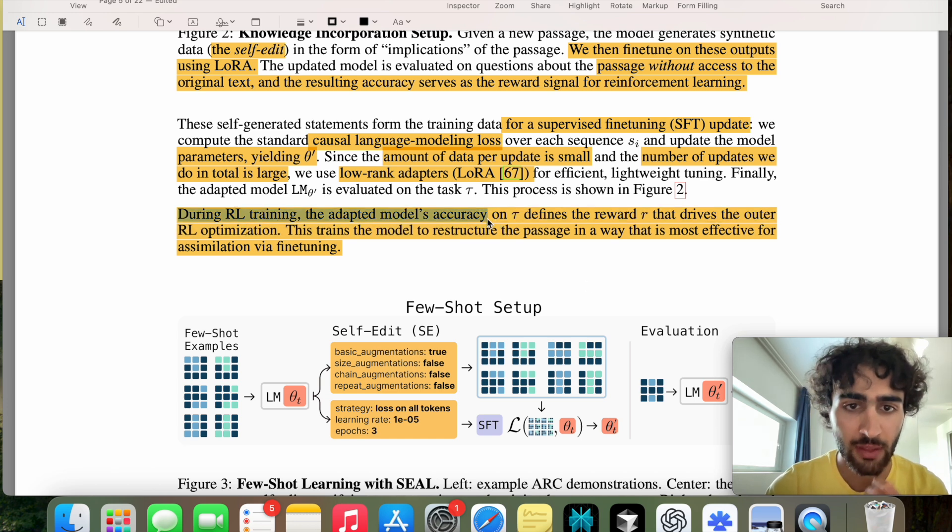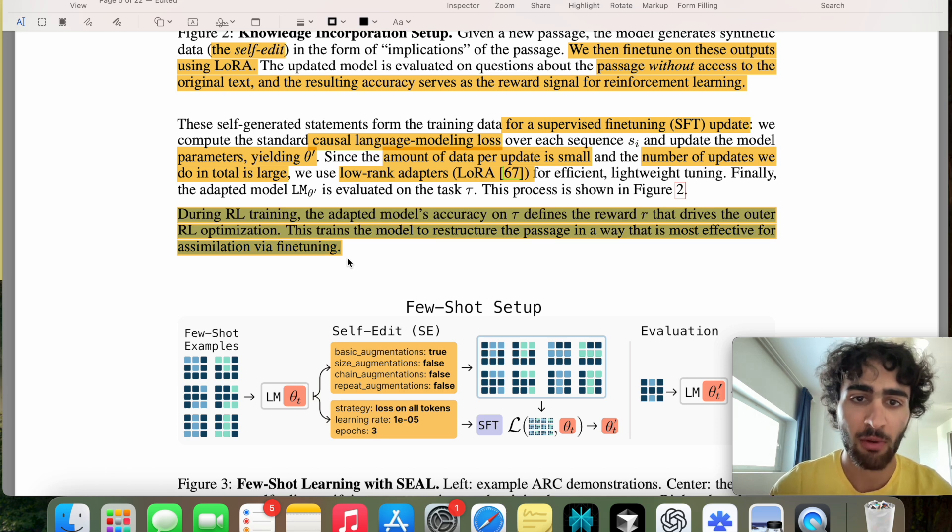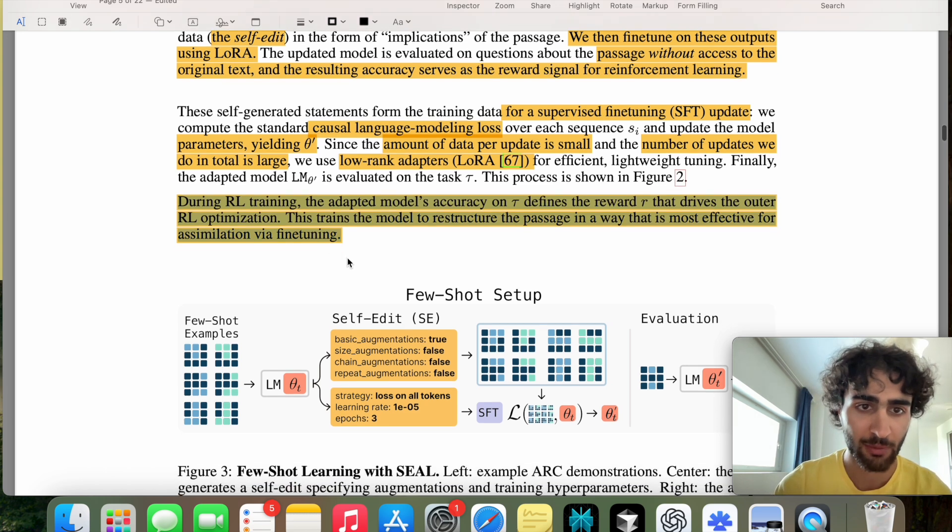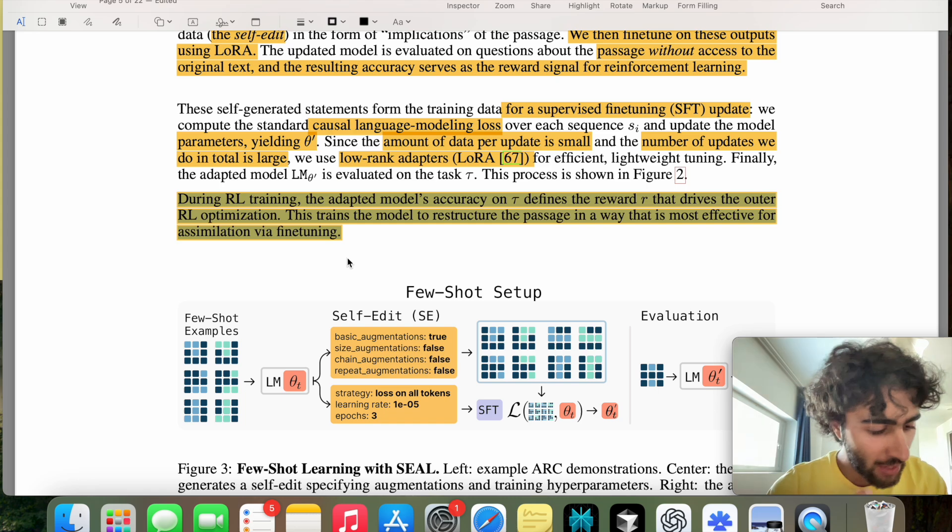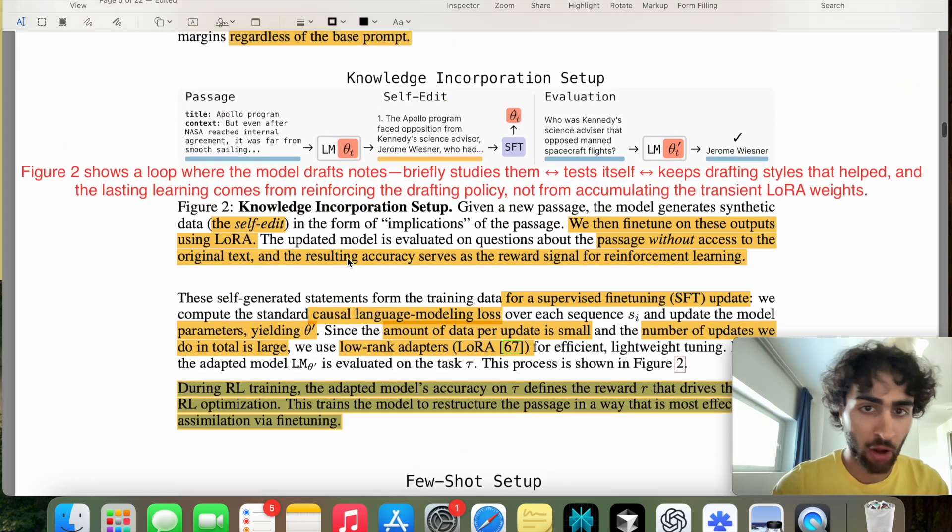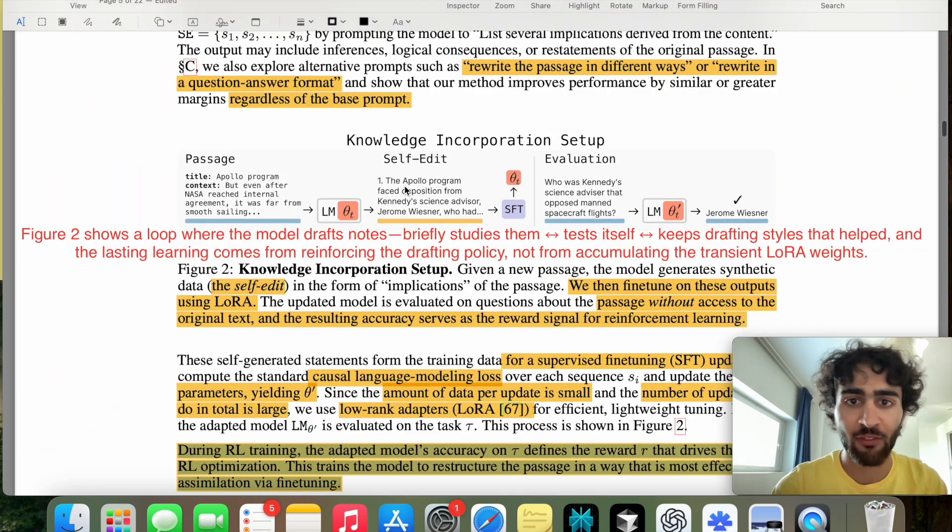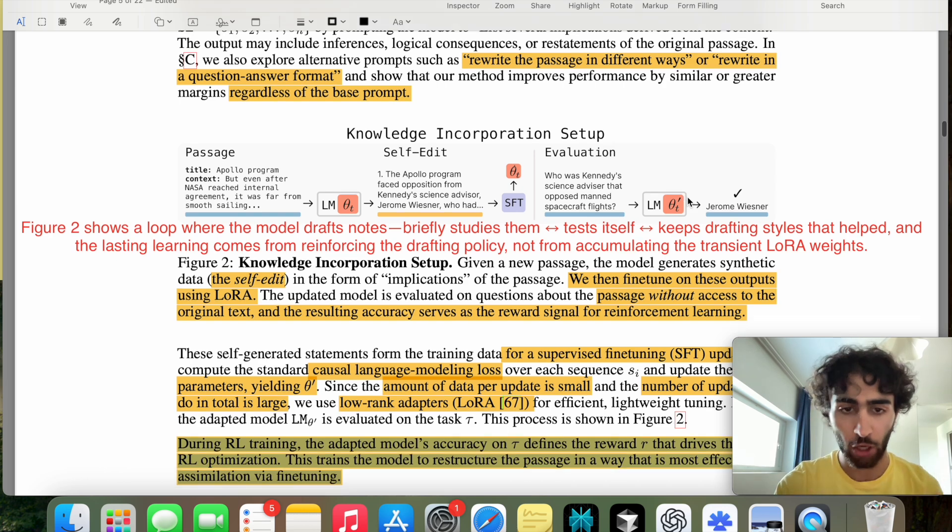And then during RL training, the adapted model's accuracy on tau defines the reward R that drives the outer RL optimization. This trains the model to restructure the passage in a way that's more effective for assimilation via fine-tuning, which is to say that by the reinforcement learning process, the model will get better at structuring this self-edit such that the supervised fine-tuning is more efficient at ensuring that the reward or the performance on the task is good.